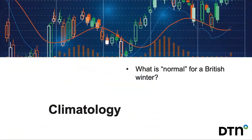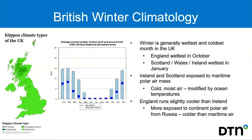What's normal for British weather going into winter? The UK is generally in an oceanic climate zone — the Scottish Highlands get a bit more polar, but most of the country is very similar. Looking at air and ground frost days through the year for Heathrow — one of the warmest spots in the country — through the winter months about half the month tends to see frosts, with ground frosts a bit more common than air frosts. Generally, England is wettest in October; Scotland, Ireland and Wales tend to be wettest in January, but winter is the wettest time of year for the entire UK.